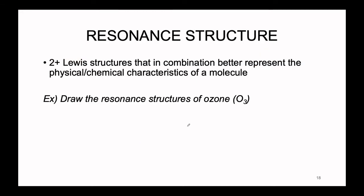We call those structures resonance structures. If two or more Lewis structures are necessary in combination to better represent the physical or chemical characteristics of a molecule, we call these resonance structures. These resonance structures oscillate back and forth to give us a better picture for what the actual molecule looks like and how it behaves on average. So how do we know when resonance structures are necessary?